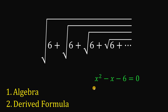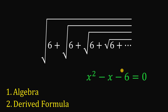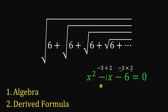This quadratic equation can be factored. We can get negative 6 by multiplying negative 3 and 2, and negative 3 plus 2 gives negative 1. So the factored form of x squared minus x minus 6 is (x minus 3)(x plus 2).